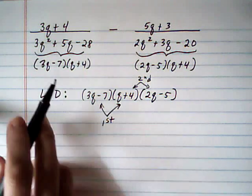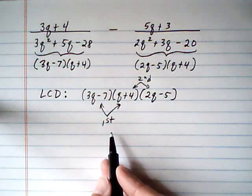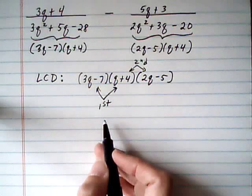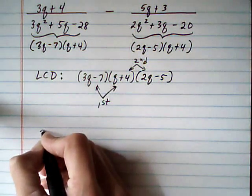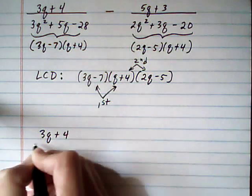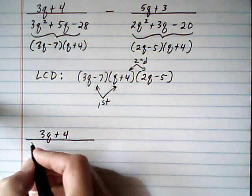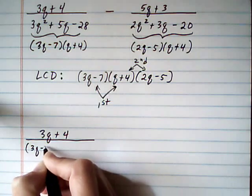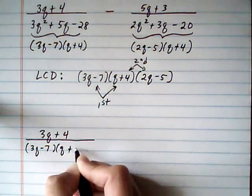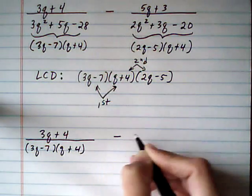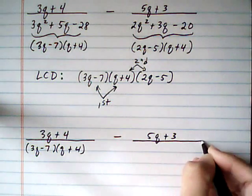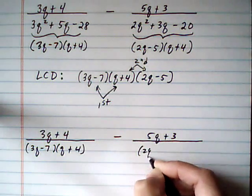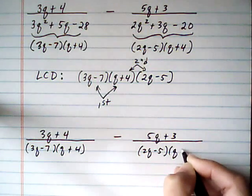So now what we need to do is force these fractions to have that denominator. So I'm going to rewrite it so it's not too hard to look at. We've got 3q plus 4, and I'll write the denominator in factored form for the first one. And the second one, 5q plus 3, over the factored denominator of 2q take away 5, q plus 4.